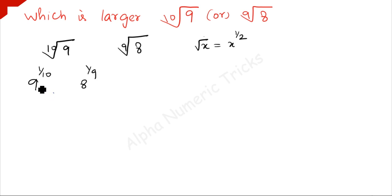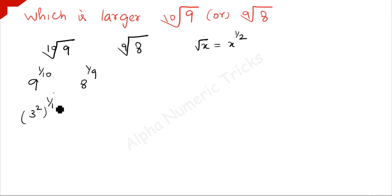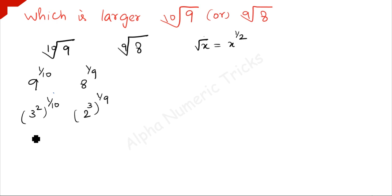Now, 9 can be written as 3 squared, so we have (3²) to the power 1/10. And 8 can be written as 2 cubed, so we have (2³) to the power 1/9.